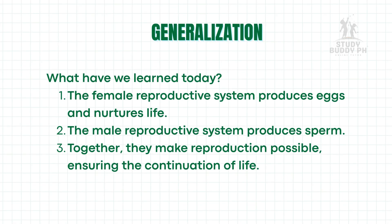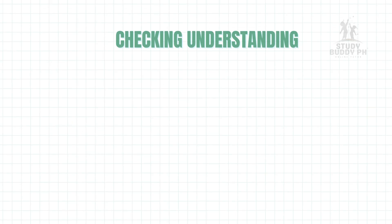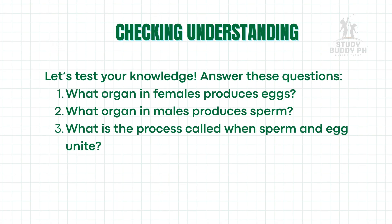So, what have we learned today? The female reproductive system produces eggs and nurtures life. The male reproductive system produces sperm. Together, they make reproduction possible, ensuring the continuation of life. Let's test your knowledge. What organ in females produces eggs? What organ in males produces sperm? What is the process called when sperm and egg unite?